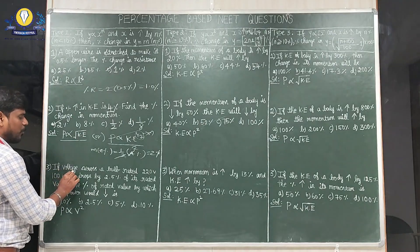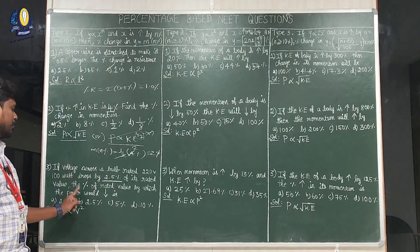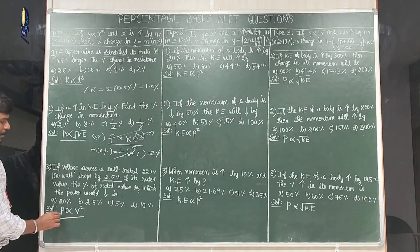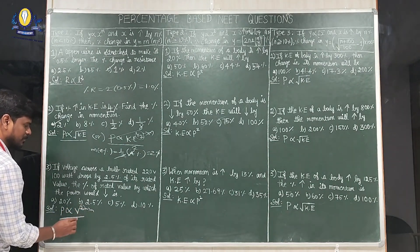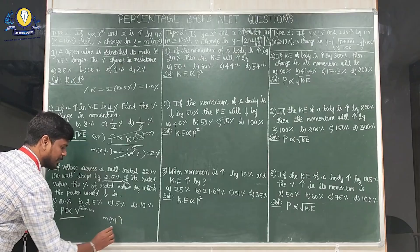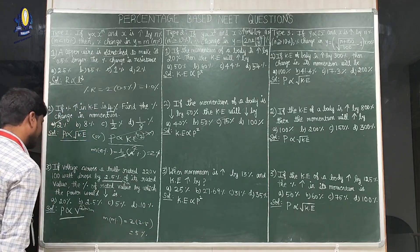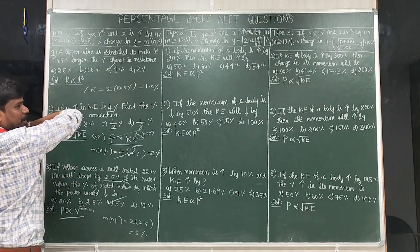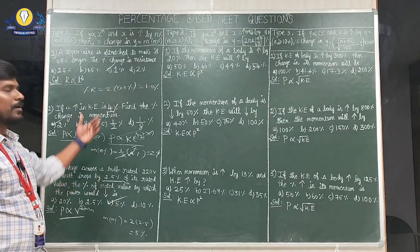Third question: if the voltage across a bulb rated 220V, 100W drops by 2.5% of its rated value, find the percentage decrease in power. Power is directly proportional to V², so m = 2. n = 2.5%. Applying the formula m × n% = 2 × 2.5 = 5%. The answer is 5%. Using this formula you get the answer within 5 seconds.